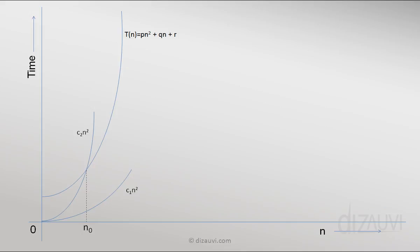Now we can say that c2·n² is an upper bound of T(n), because after some value of n, c2·n² will always be greater than T(n), no matter what.